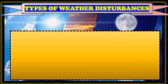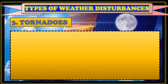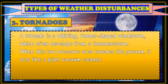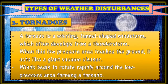Number three weather disturbance is tornadoes. A tornado is a whirling, funnel-shaped windstorm which often develops from a thunderstorm. When this low-pressure area touches the ground, it acts like a giant vacuum cleaner. Winds begin to rotate rapidly around the low-pressure area, forming a tornado — this is what is commonly called ipo-ipo.